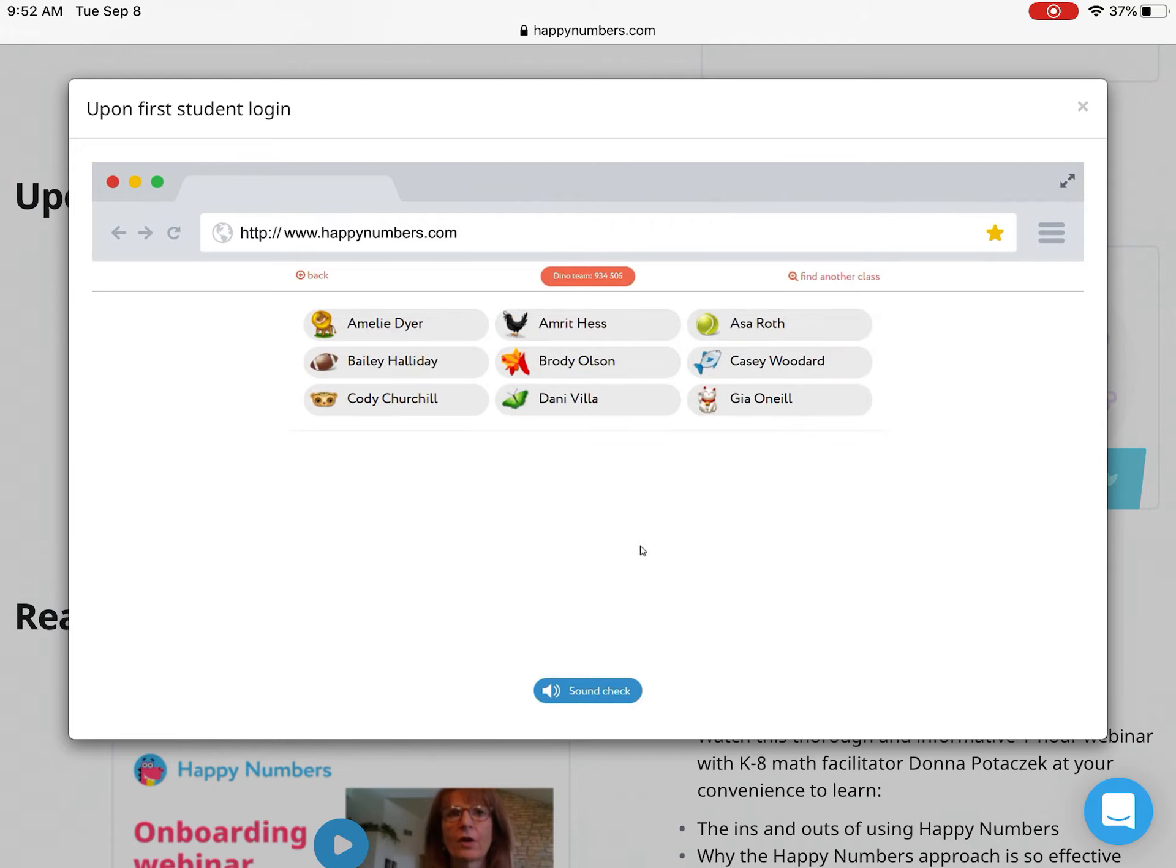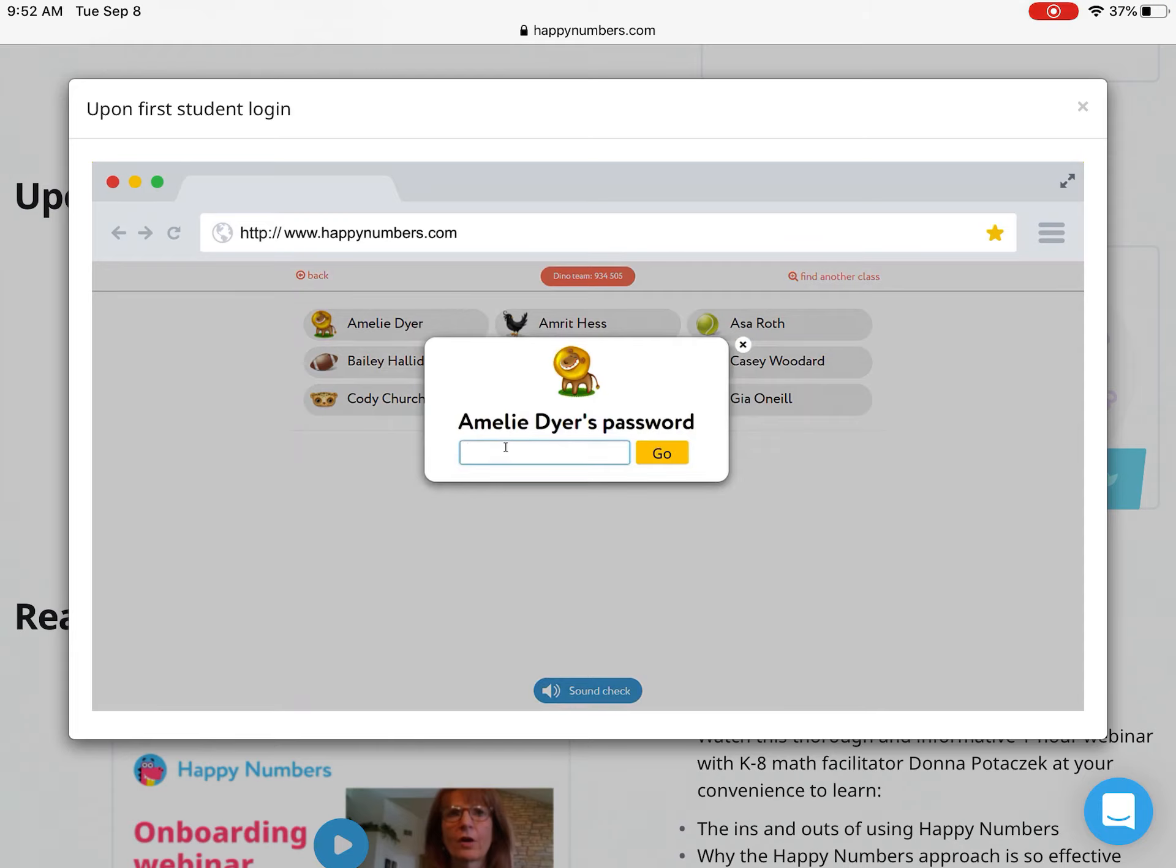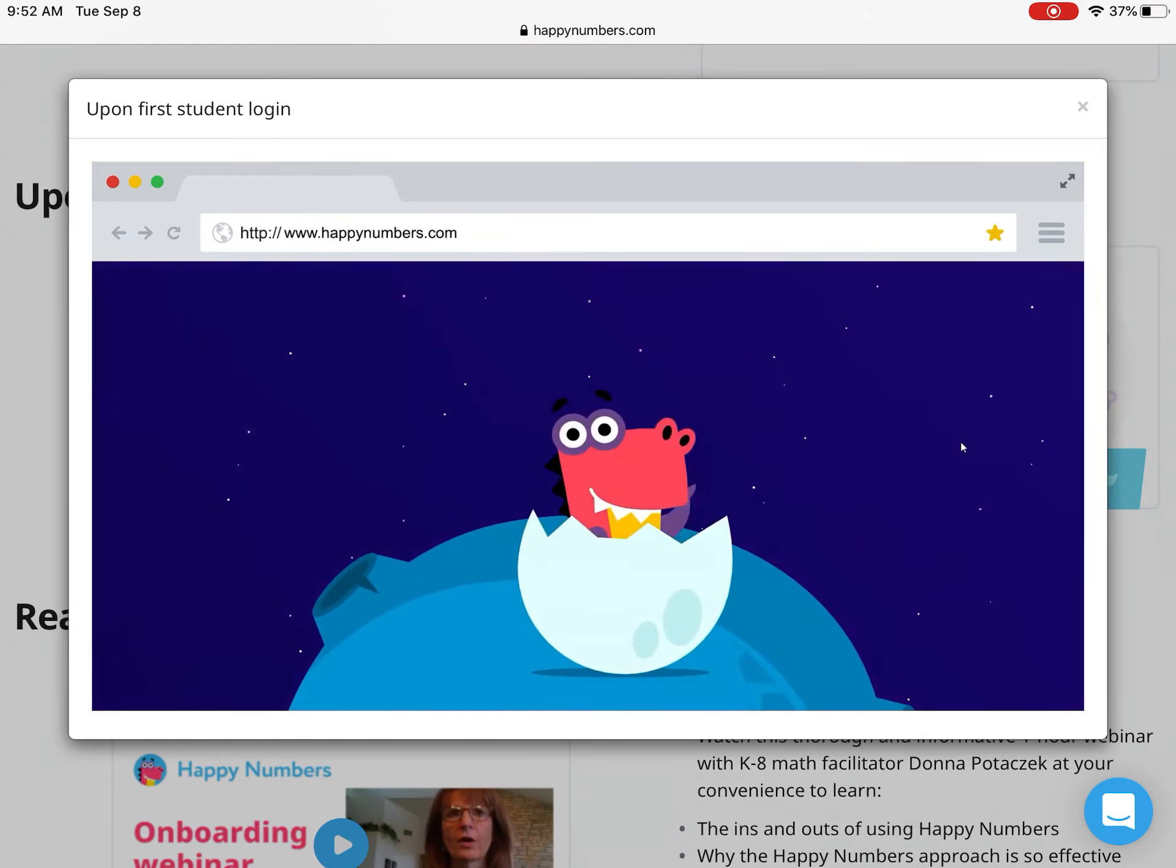Find the student's name and avatar on the class roster. Clicking on it will bring up a window asking for the student password, which was emailed to you as a PDF. Once that's entered, it's time for students to grab the wheel.